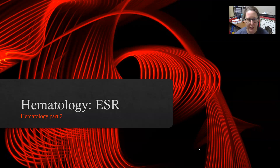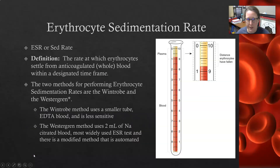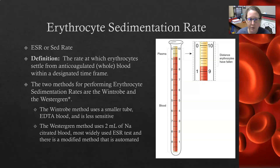Hi, this is Dr. Ed, continuing our Basics of the Lab series — hematology. We're going to look at ESR or the SED rate. Erythrocyte sedimentation rate, also known as ESR or SED rate depending on your lab, is the rate at which erythrocytes — red cells — settle from anticoagulated whole blood within a designated time frame, usually an hour.